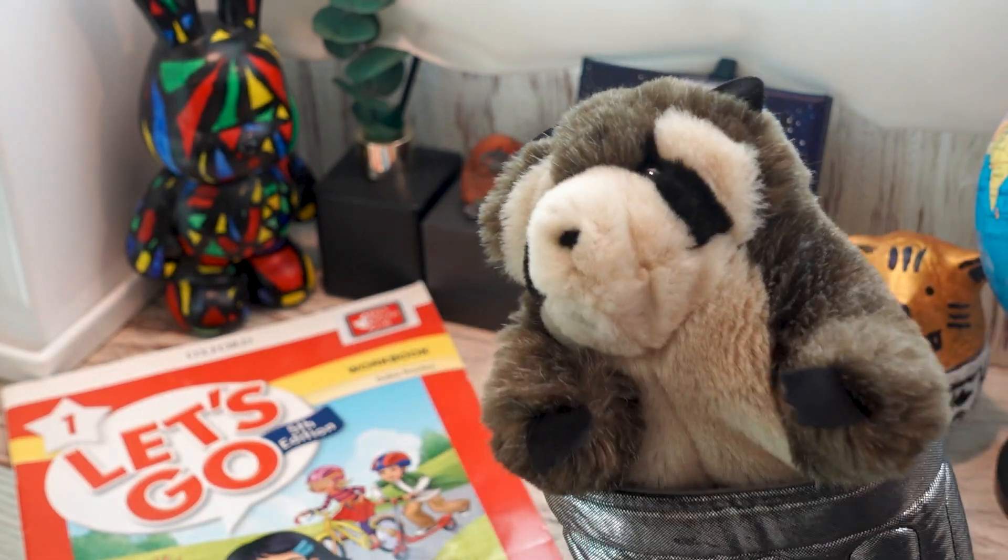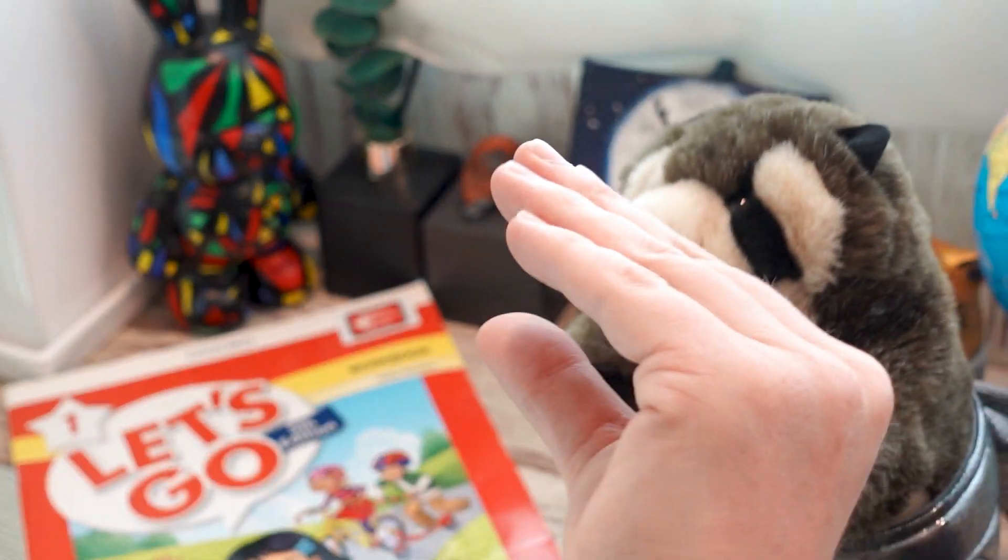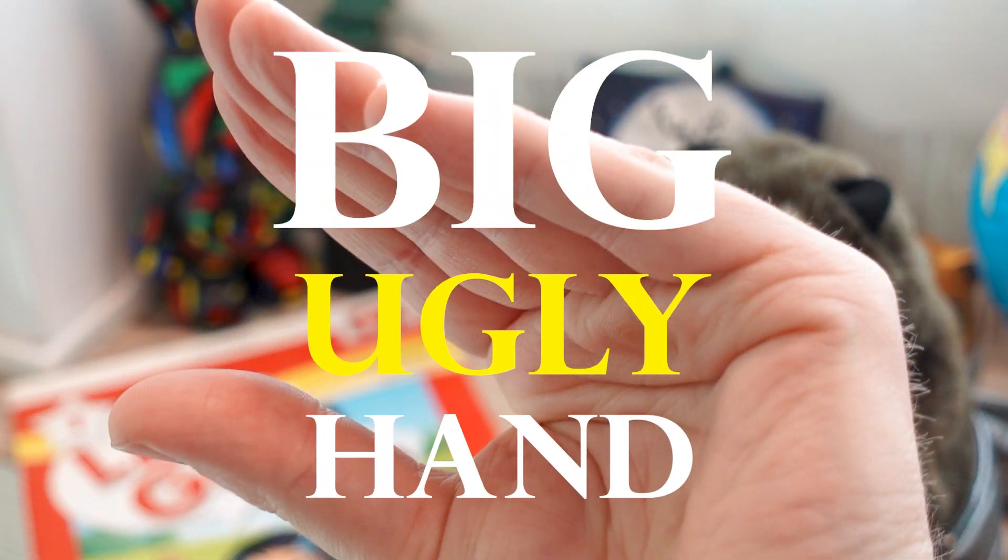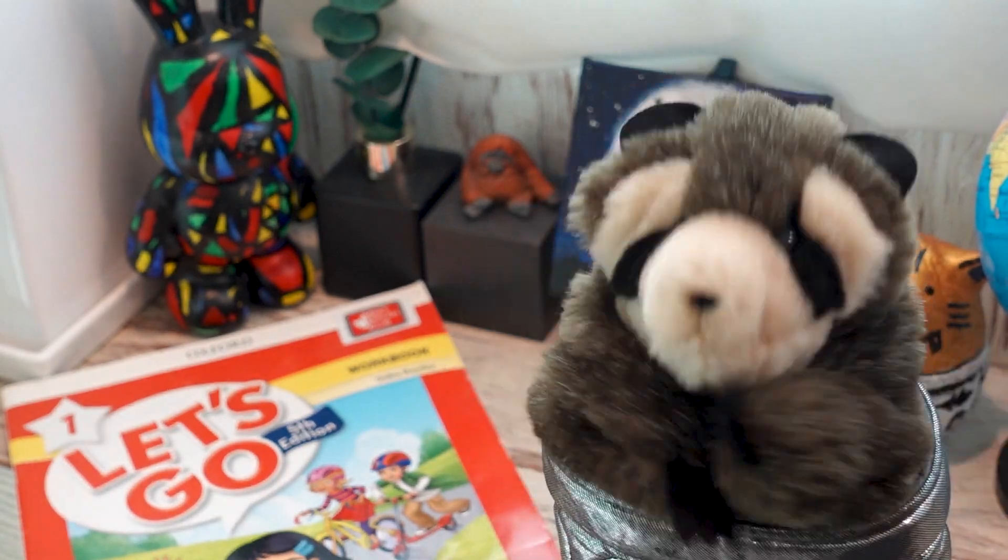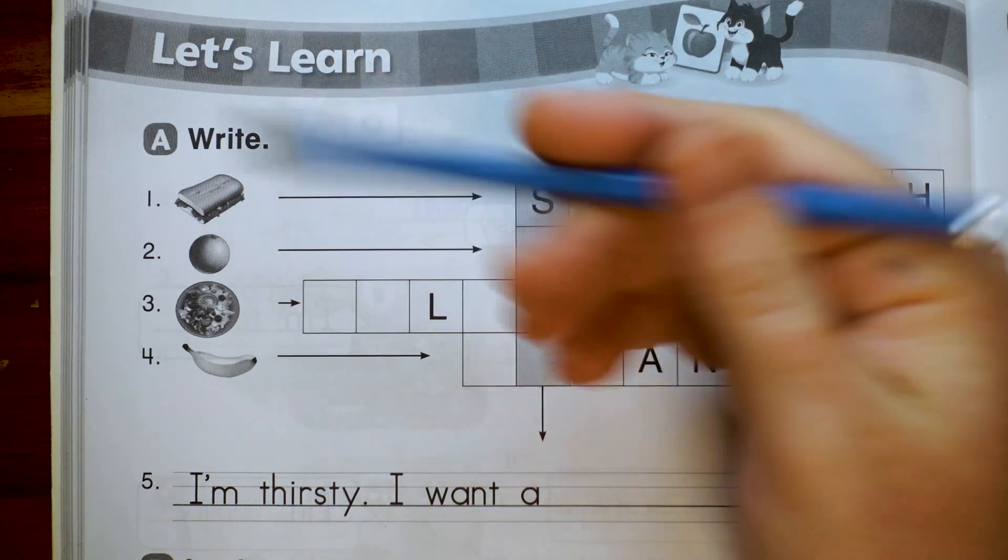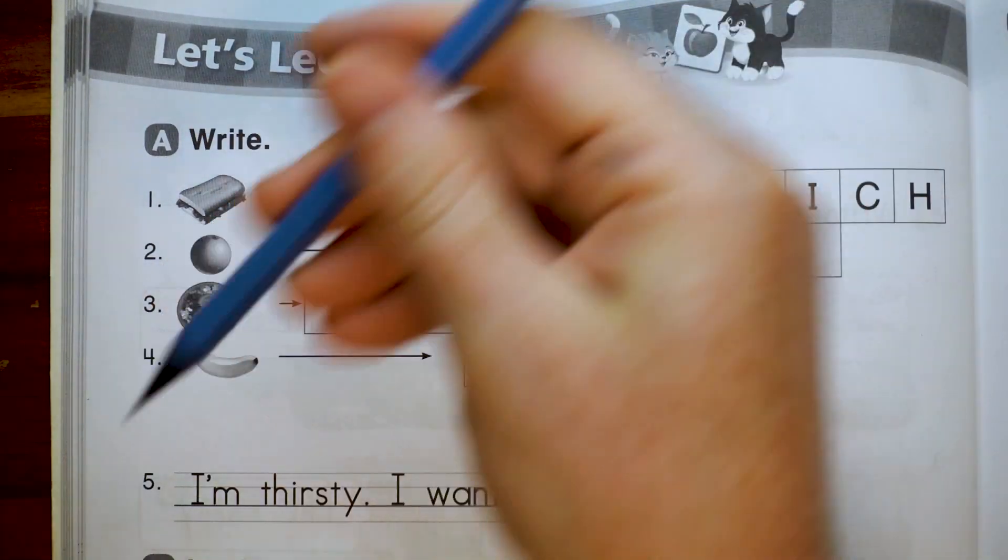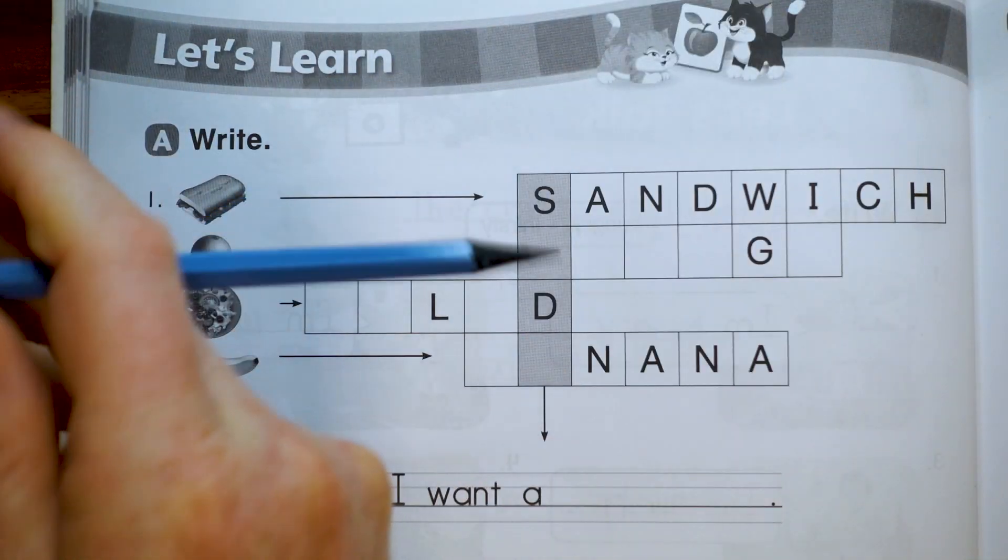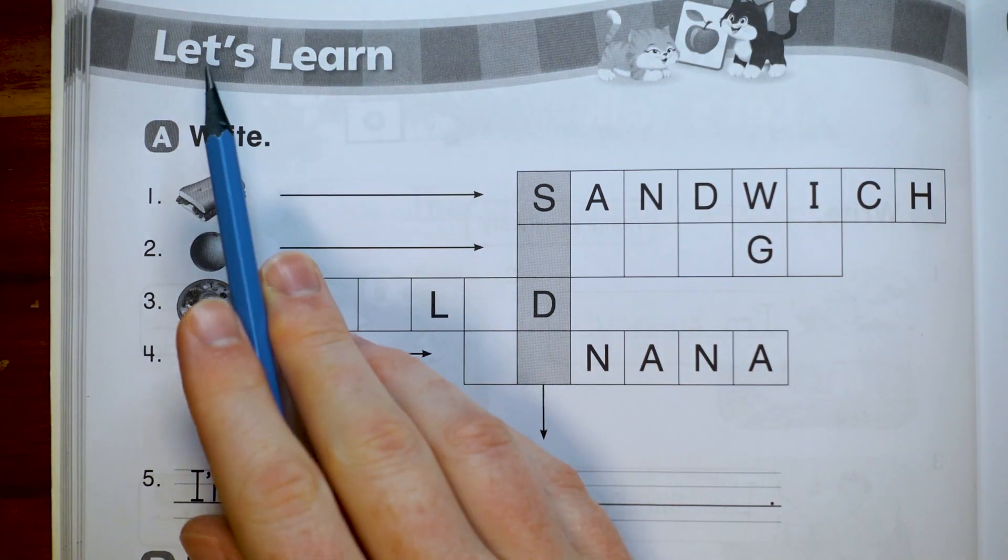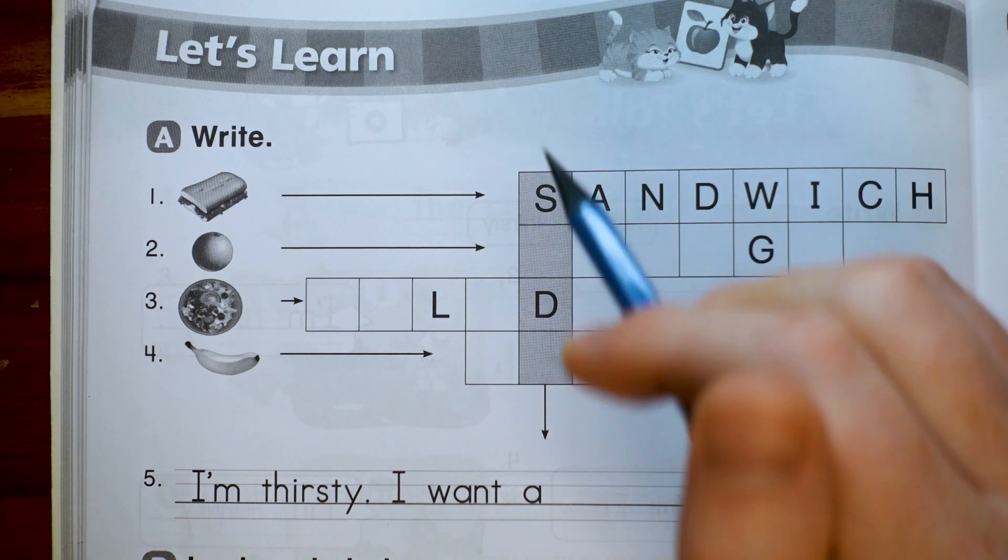All right. It's time for workbook. Hello everybody. Today we are going to do pages 58 and 59 in the Let's Go 1 workbook. This is the Let's Learn section for Unit 7.